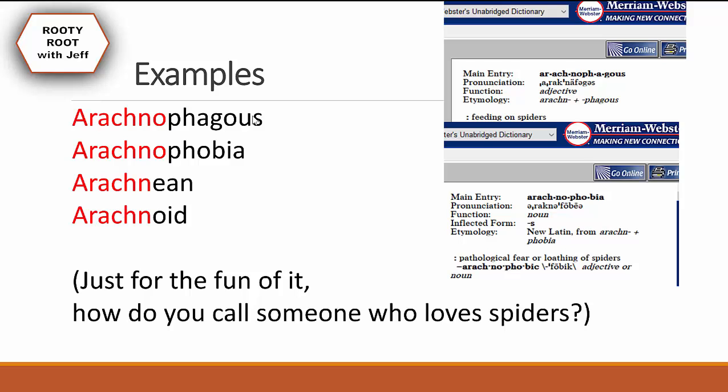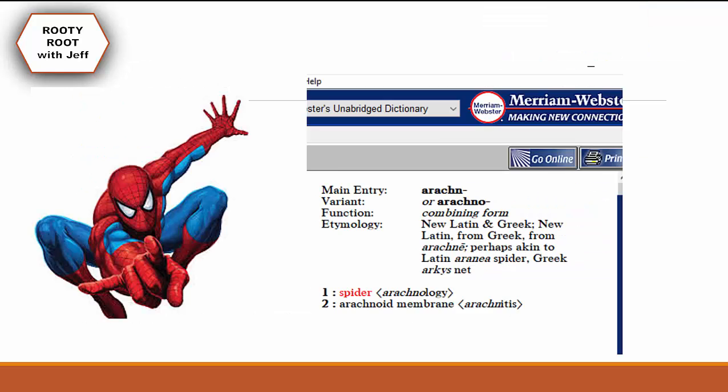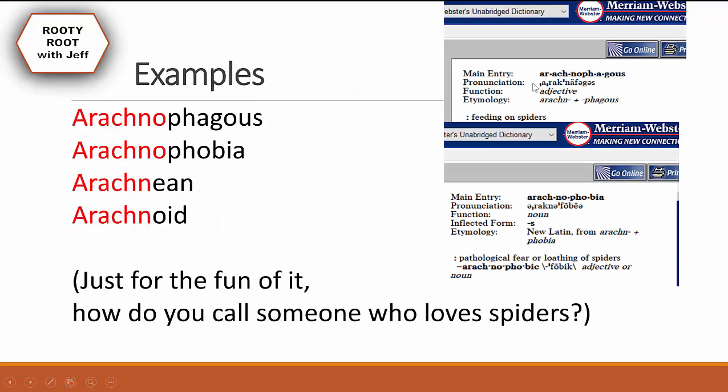The examples are: arachnophagus, arachnophobia, arachnian, and arachnoid. The first word is 'arachnophagus' and it means feeding on spiders. Its etymology is 'arachna' plus 'phagus'. Phagus means feeding on, so it makes sense — arachna means spider, so it means feeding on spiders.